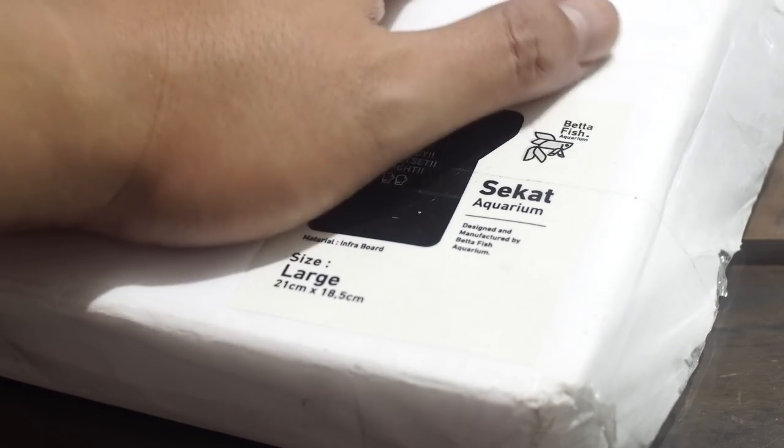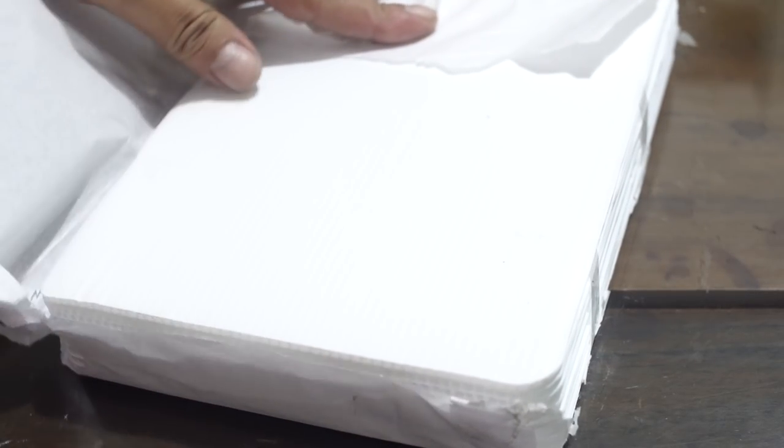Produk yang kedua adalah sekat soliter. Dia terbuat dari koroplast alias plastik. Udah gitu aja. Dan koroplast itu kalau kalian tahu, itu kalian perhatiin deh ini, itu pasti kalian sering lihat di toko buku.